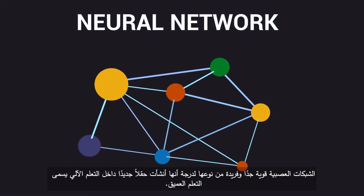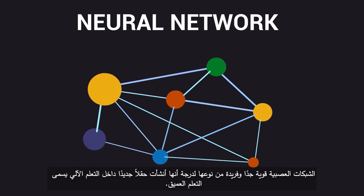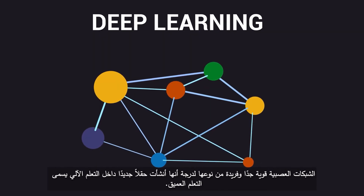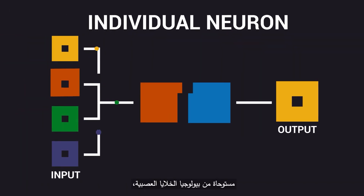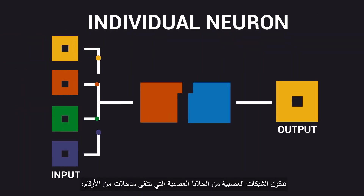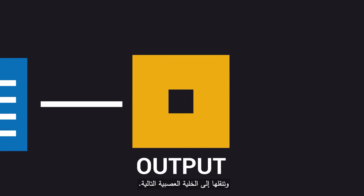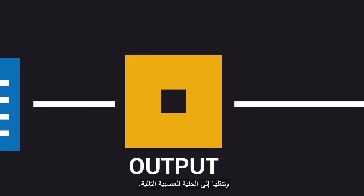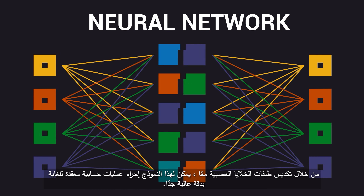Neural networks are so powerful and unique that they originated a new field inside machine learning called deep learning. Inspired by the biology of nerve cells, neural networks consist of neurons that receive an input of numbers, process this input through a set of functions, and transmit it to the next neuron. By stacking layers of neurons together, this model can perform very complex computations with very high accuracy.